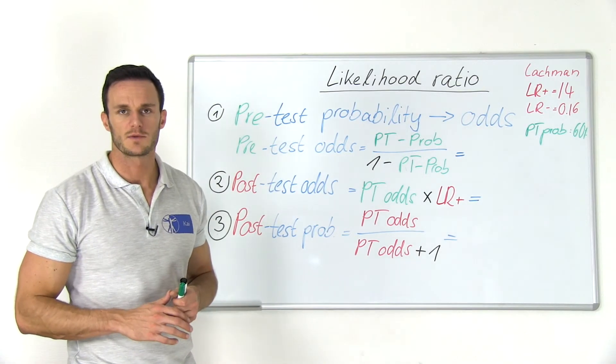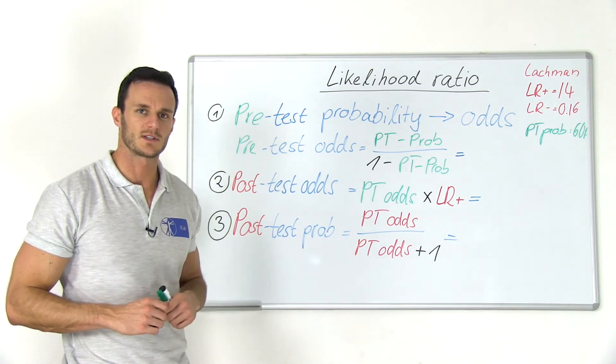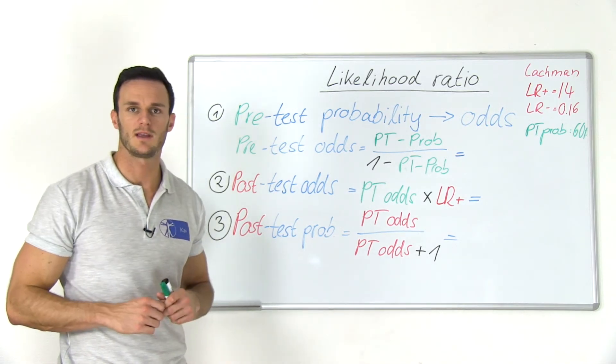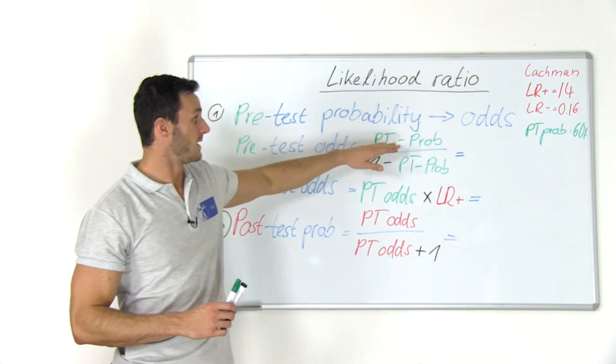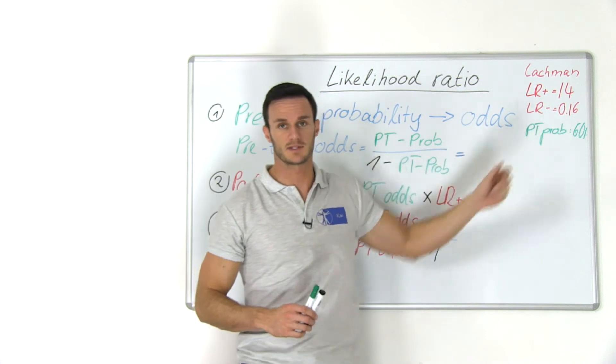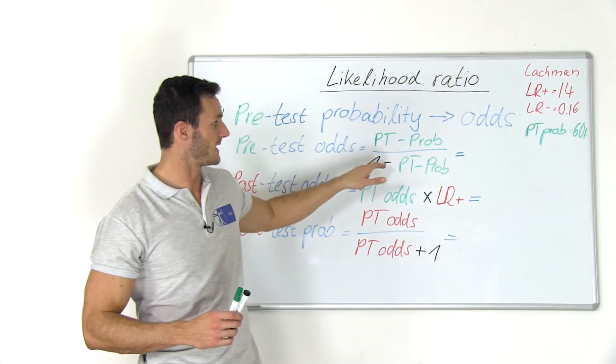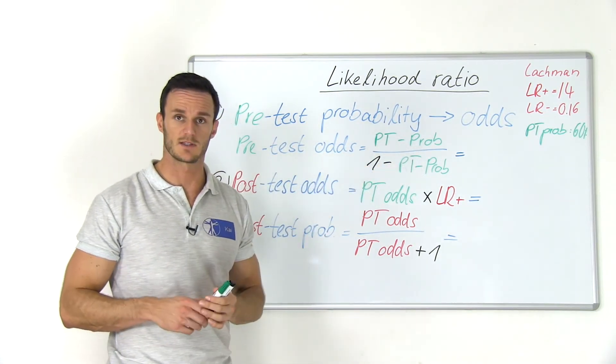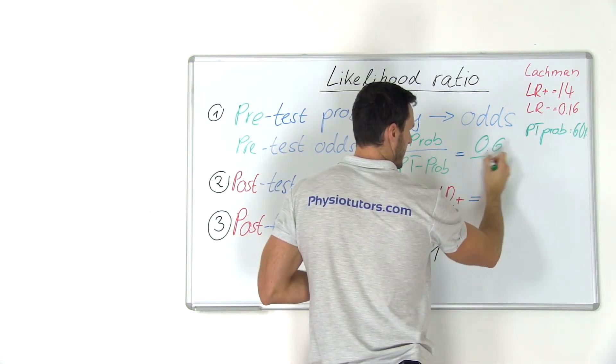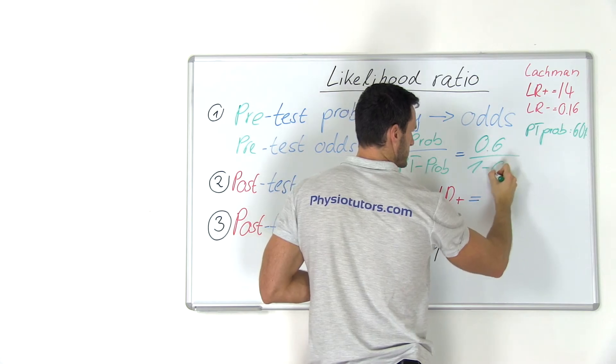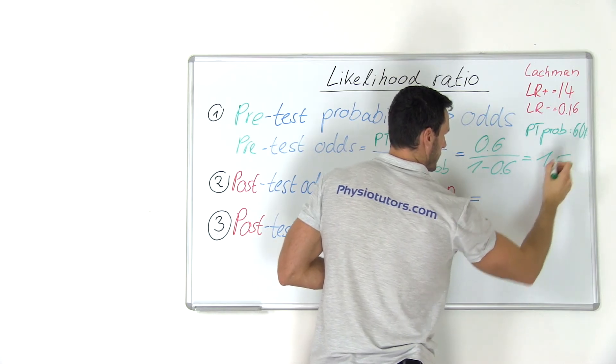The second more exact option is to calculate the post-test probability. In order to do that, I first have to convert the pre-test probability into pre-test odds. And I can do that if I take our pre-test probability, which we said was 60% based on our anamnesis and examination, and divide this probability through 1 minus pre-test probability. So in our case, this would be 0.6 divided through 1 minus 0.6. So we end up with odds of 1.5.